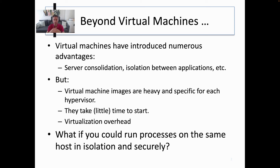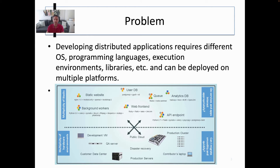So the question here is: what if you could run processes on the same host in an isolated and secure manner? This is related to the problem called the matrix of hell, where you typically have several components as part of your application, and these components depend on different libraries. These components need to be run on several hardware environments, such as your development PC, your laptop, a public cloud, a production cluster, a contributor's laptop. So providing this ability to mix and match and ensuring that the application is going to run across a myriad of platforms — this is what is difficult.